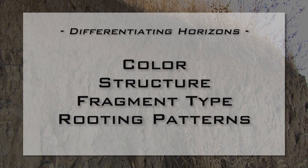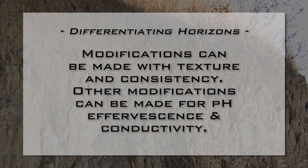To differentiate horizons, start with what is most obviously seen, such as strong differences in color, structure, amount or type of fragments, abundance of roots, and other features that readily stand out. Place markers where your confidence is highest in distinguishing between horizons. Then modify and/or refine the locations of these markers with what you can feel, such as differences in texture or consistence, and with what you can measure in the field, such as pH, effervescence, and electrical conductivity.